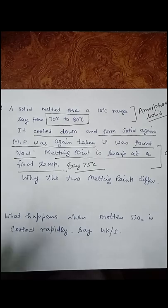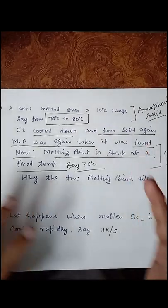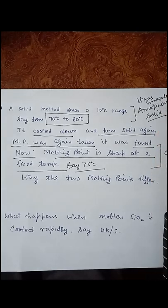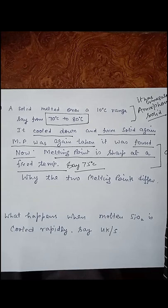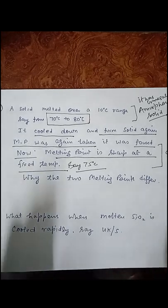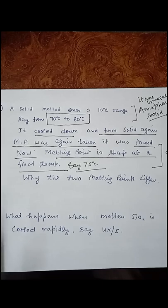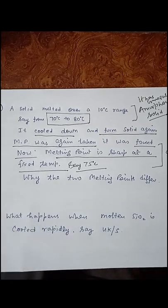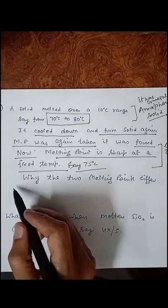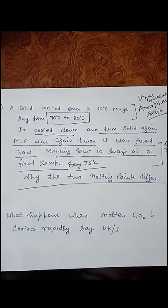When the amorphous solid melted, it had an irregular arrangement — a short range order of particles. But after melting and cooling again, the particles arranged themselves in a long range order, forming a crystalline lattice. So the solid converted from amorphous to crystalline solid, and hence the melting point became fixed.